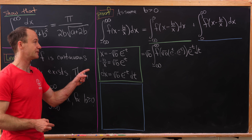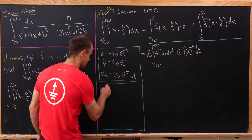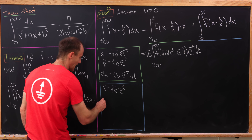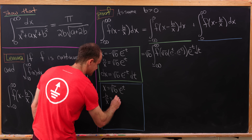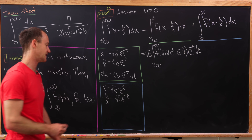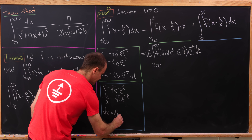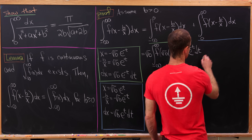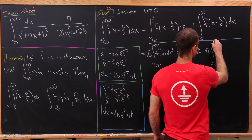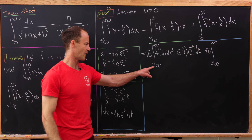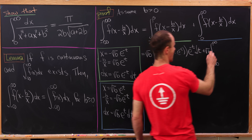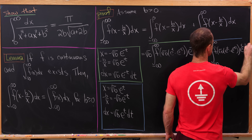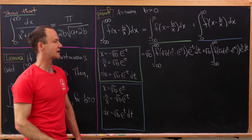Now let's see what we need for the blue underlined integral. In this case we take x equal to the square root of b times e to the t. That means minus b over x equals minus square root of b times e to the minus t, and dx is simply equal to the square root of b times e to the t dt. Rewriting, we'll have the square root of b and bounds from minus infinity to infinity, and f evaluated at the square root of b times e to the t minus e to the minus t, with an e to the t dt outside.